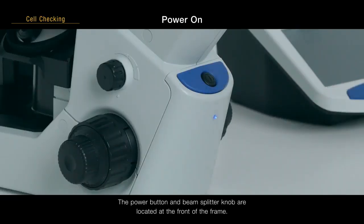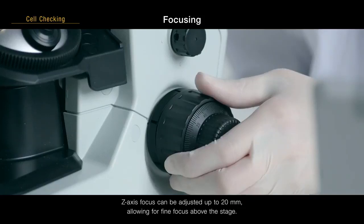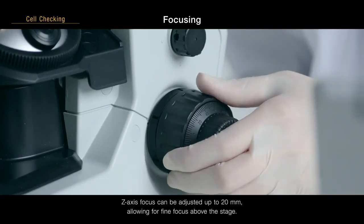The power button and beam splitter knob are located at the front of the frame. Z-axis focus can be adjusted up to 20 mm, allowing for fine focus above the stage.